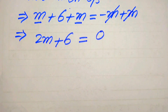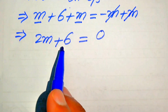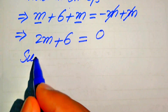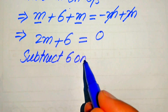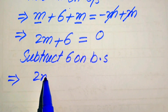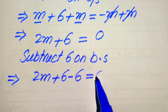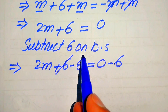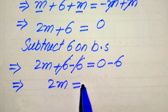Because we solve for the values of m, we need to move all constant terms to the right hand side. First we eliminate 6 from the left hand side by subtracting 6 on both sides. After subtraction it is written as 2m plus 6 minus 6 equals 0 minus 6, and the plus 6 and minus 6 cancel out, giving us 2m equals minus 6.